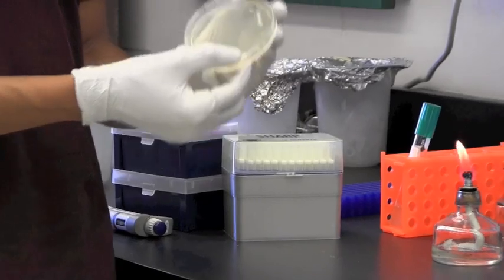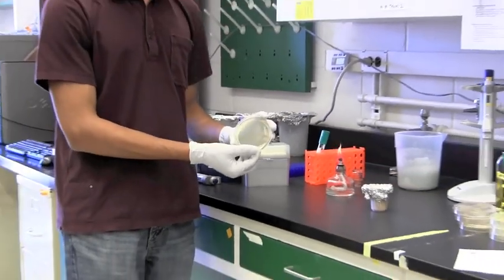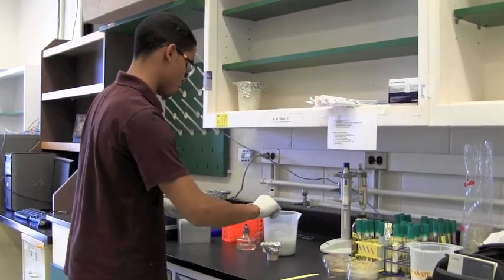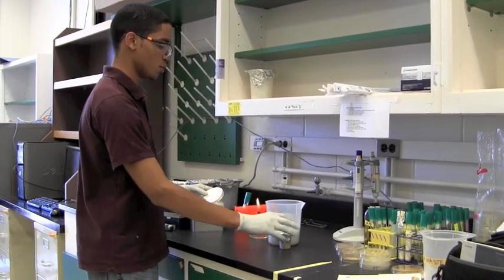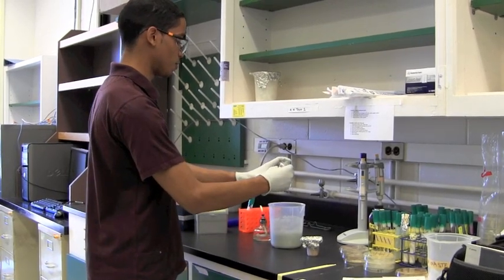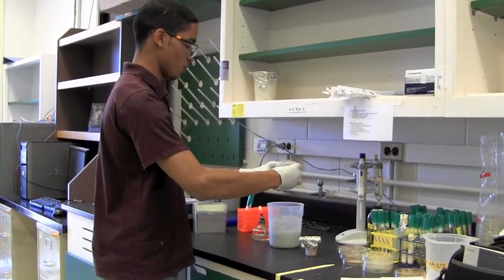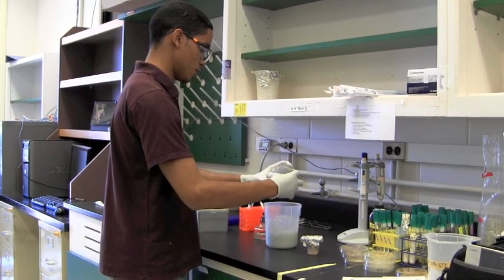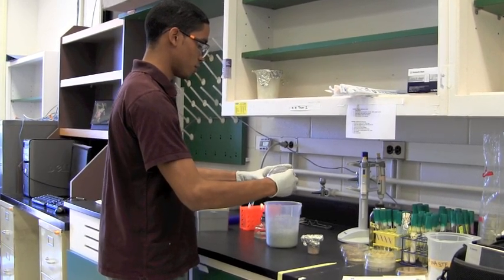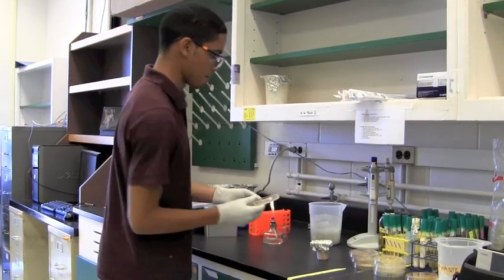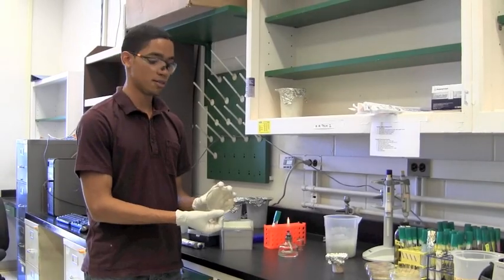And now that I've gotten a uniform layer of inoculum onto my plate, I'm going to carefully dispose of my beads onto a dirty bead container. Make sure they're all on the bottom on one side of the closed plate, and just carefully shake them off, trying not to contaminate my plate. And now my spread plate is ready.